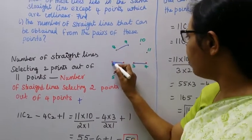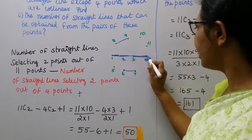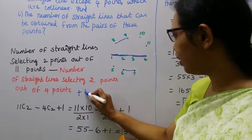Collinear - this is one straight line, one full straight line: one, two, three, four. That is plus one.